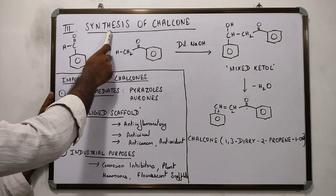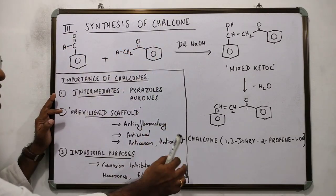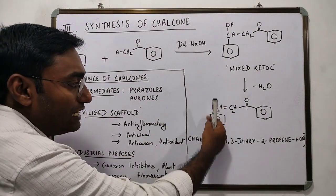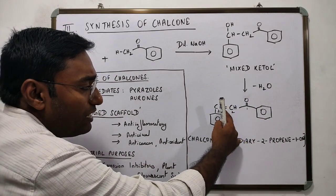Synthesis of Chalcones. Chalcones, which are 1,3-diaryl-2-propene-1-one, are important intermediates in the synthesis of pyrazoles and aurons.